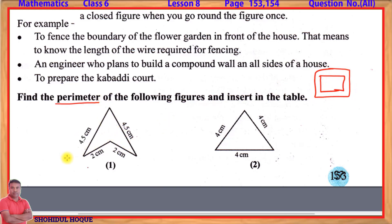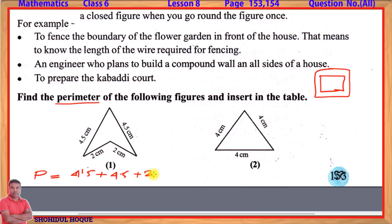The perimeter is the boundary measurement. The sides measure 4.5 cm each. This is 4.5 cm, and this is 4.5 cm. This is the perimeter in centimeters.